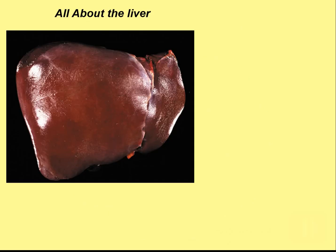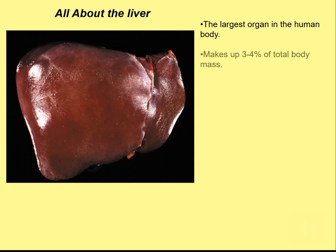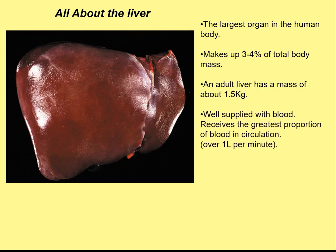Let's have a think about the liver. The liver is a really important organ in your body because it actually does huge amounts of metabolic reactions to do with your blood. It's the largest internal organ in your body — your skin is the largest organ overall, but internally it's the largest organ, about three to four percent of your body mass, about one and a half kilograms. It has a really good blood supply and actually gets over a litre of blood per minute, so quite a big proportion of your cardiac output goes through your liver.